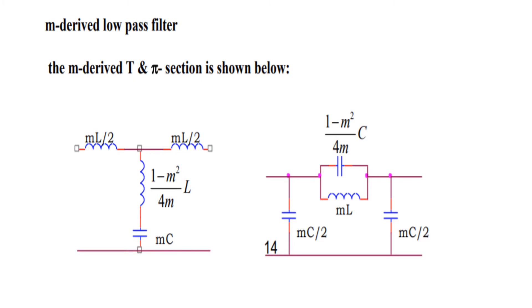Here are some M-derived filters. First is the M-derived low pass filter. The M-derived T and pi sections are shown below. In the T section, ML/2 and ML/2 are in the series arm, and in the shunt arm: (1 - M²) / (4M) into L, in series with capacitance MC.